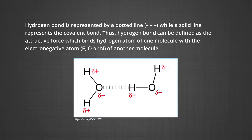The hydrogen bond is represented by a dotted line, while a solid line represents the covalent bond. Thus, the hydrogen bond can be defined as the attractive force which binds the hydrogen atom of one molecule with the electronegative atom — fluorine, oxygen or nitrogen — of another molecule.